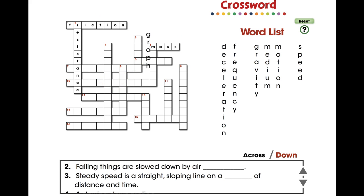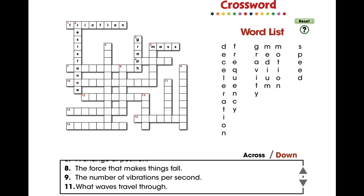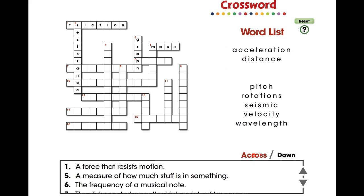Drag a word from the list to its correct position in the puzzle. Use the arrows to scroll through all the clues. Switch between across and down clues and words.